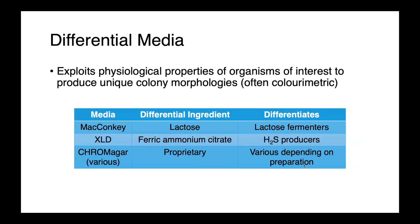Differential media exploits some physiological property of the organism to produce a particular colony morphology — oftentimes something colorimetric that allows us to look at a colony and say we think that is organism X. MacConkey agar, in addition to being selective, is also differential — it contains lactose and a pH indicator which allows us to differentiate lactose fermenters from lactose non-fermenters. XLD agar includes ferric ammonium citrate, which allows us to identify hydrogen sulfide producers — they turn black on this media. And then there's a wide variety of chromogenic media; ChromAgar is one particular brand that contains proprietary differential ingredients allowing the differentiation of a variety of bacteria depending on which specific product is being used.